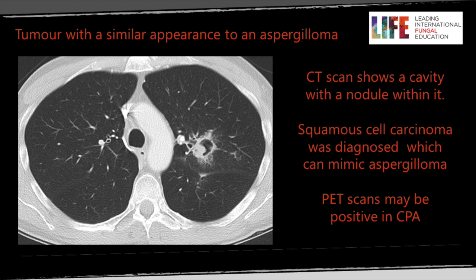Tumours can form things that look very similar to chronic pulmonary aspergillosis, and this differential diagnosis is important. Here's a patient with a cavity and soft tissue area lying medially that's not fallen posteriorly. We've seen cases where aspergillus fungal balls lodge like this. In this case, the PET scan was positive and biopsy proved squamous cell carcinoma. But we've also seen the reverse — where people strongly suspected recurrent disease after surgery and it turned out to be aspergillus infecting the cavity.